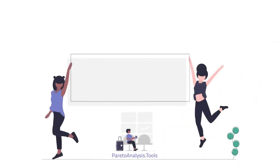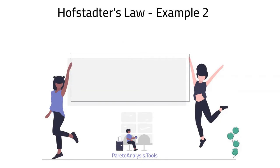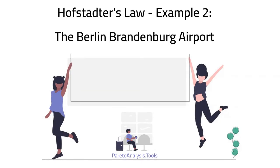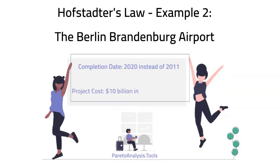The Berlin-Brandenburg Airport: after 15 years of planning, construction began in 2006, with the opening planned for October 2011. There were numerous delays and many setbacks, and it was finally opened on October 31, 2020. The original budget was $2.83 billion, but current estimations are close to $10 billion.